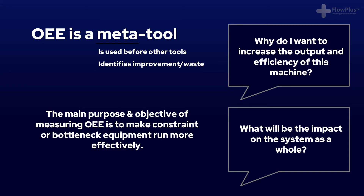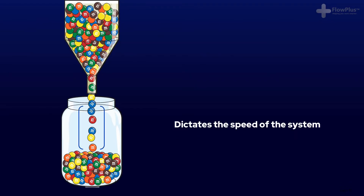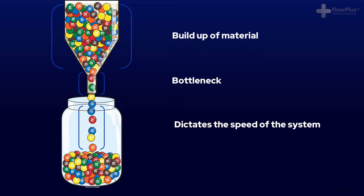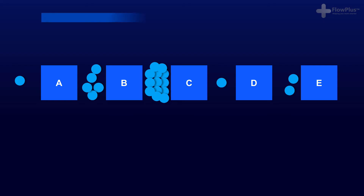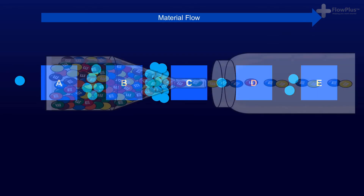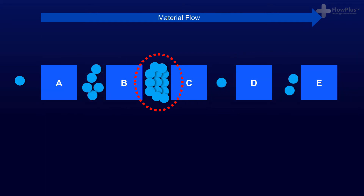Bottlenecks are the processes that define the maximum speed and therefore output of a system. If you think of the word bottleneck, it is exactly that — the thinnest part of the bottle that dictates the rate at which the containing liquid can be poured. Bottlenecks within manufacturing environments can often be spotted a mile away by simply comparing processes to see which has the biggest queue of products in front of it. This will signify a process that is slower than the rest, and therefore the bottleneck process — in the same way that when you turn a bottle upside down, the liquid will congregate at the start of the bottleneck.